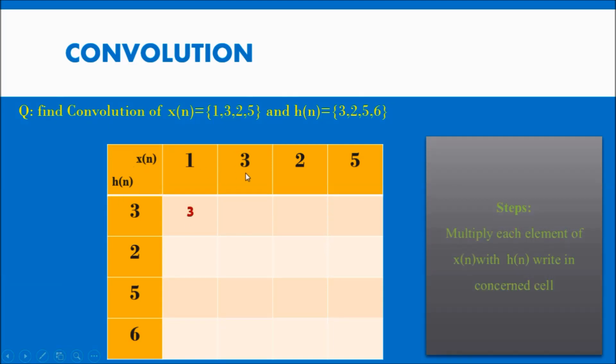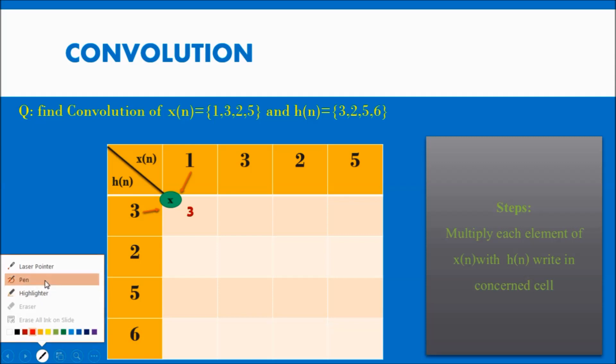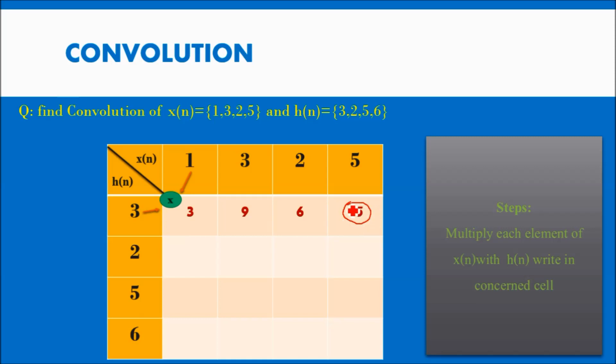After writing x of n and h of n, multiply each element of x of n with h of n and write the multiplication result in the corresponding cell. So 3 and 1 multiplied gives the answer written here. 3 and 3 multiplied gives 9, written here. 3 and 2 gives 6, written in the third cell. 5 multiplied by 3 gives 15.